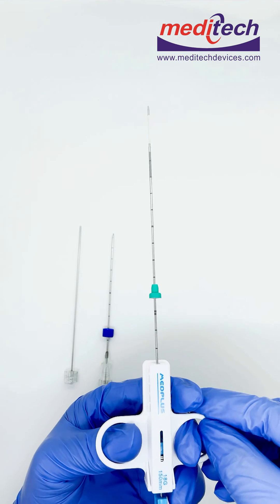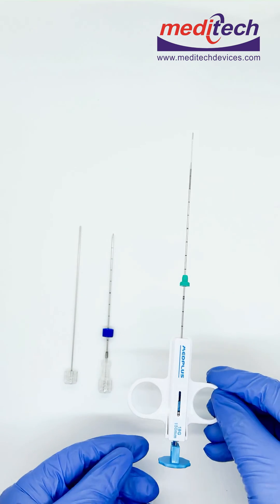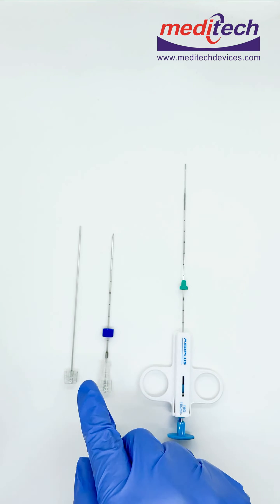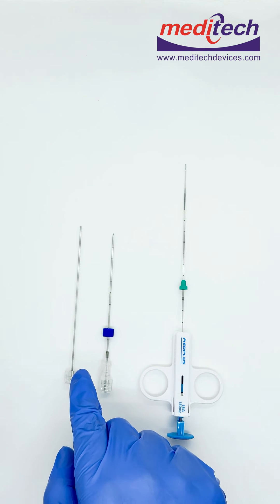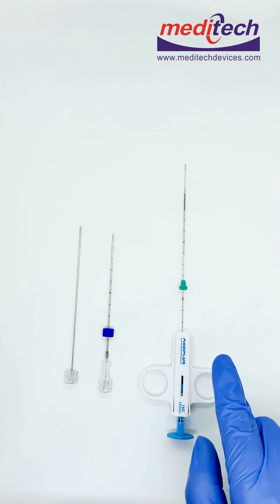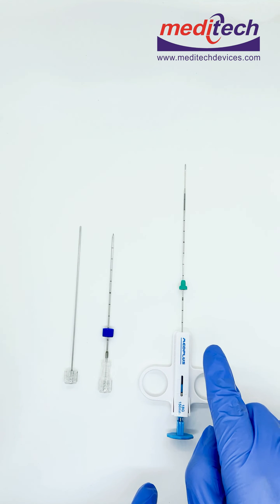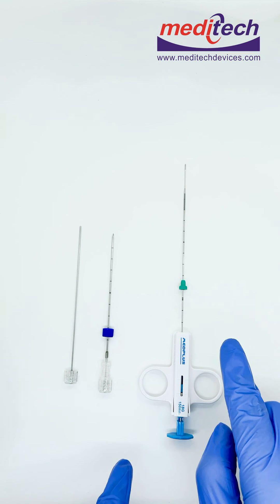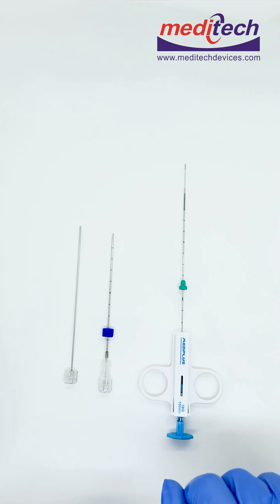Once you get the core, you can send it for pathology. It comes with compatible coaxial needles. The semi-automatic biopsy instrument comes in 14 gauge, 16 gauge, 18 gauge, and 20 gauge with various lengths. For more details, kindly visit our website www.meditechdevices.com.